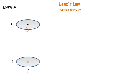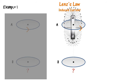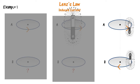Here we have a current-carrying loop A carrying current in the anticlockwise direction, and it is made to fall toward loop B. A current-carrying loop with anticlockwise current behaves like a bar magnet with north pointing upwards and south pointing downwards. As loop A falls toward B, the induced current in B will oppose this movement by creating a south pole facing A. So the current in loop B will be in the clockwise direction.